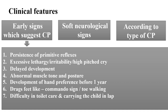Other early signs include abnormal posture such as scissoring or arching of the body; development of hand preference at a very early age, even before one year, which is characteristically present in hemiplegic CP; scissoring gait, commando crawl signs, or toe walking present in spastic diplegia; and mothers usually complain of difficulty in toilet care and carrying the child in lap.